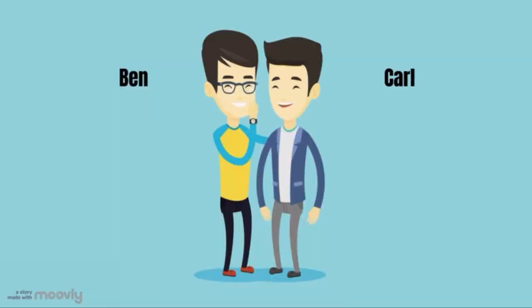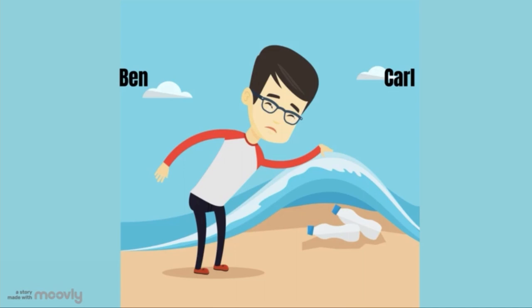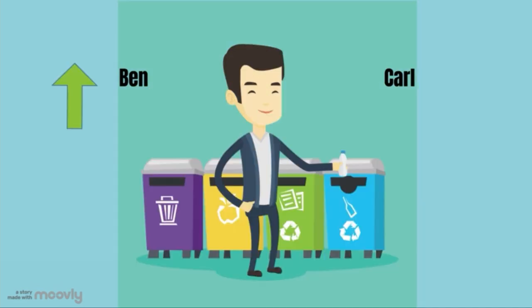Take Ben and Carl here. Both Ben and Carl pick up rubbish, which creates a positive ripple effect for Ben, making him recycle more. Carl, on the other hand, experiences a negative ripple effect and recycles less.